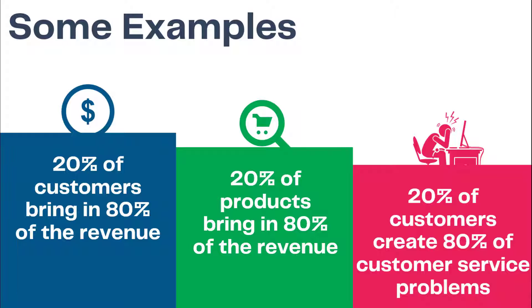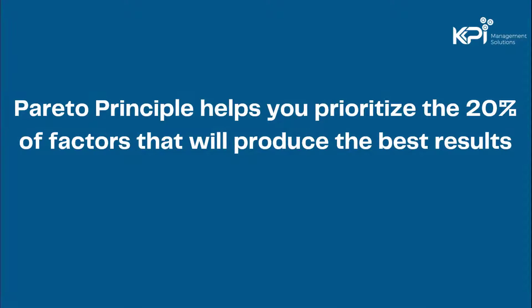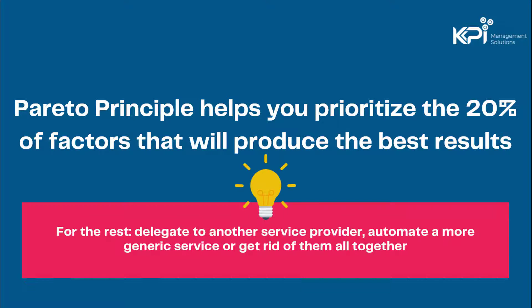What the Pareto principle helps us do is prioritize the 20% of the factors that will produce the best results. For the rest, we can figure out what to do with them — either delegate them to another service provider, automate a more generic service to handle them, or potentially even get rid of them altogether.